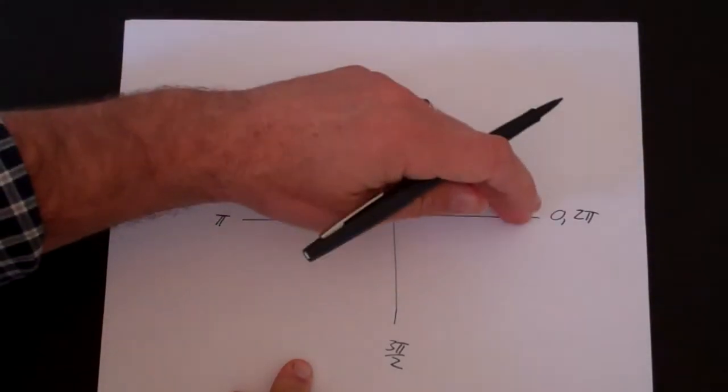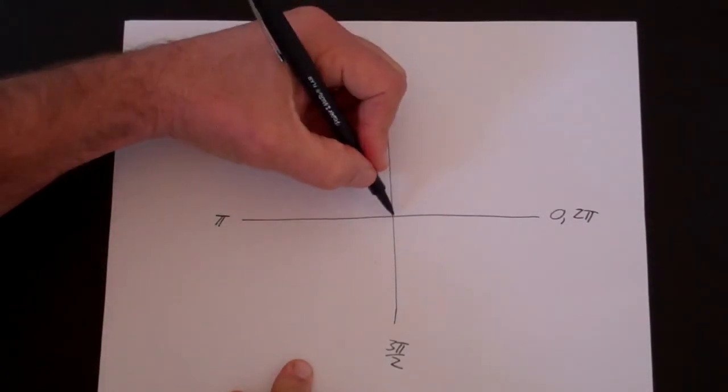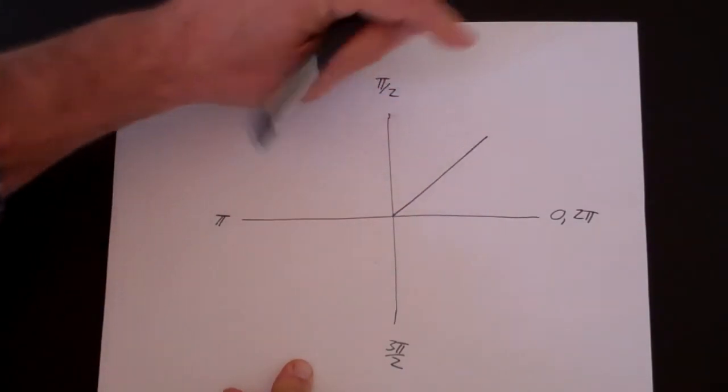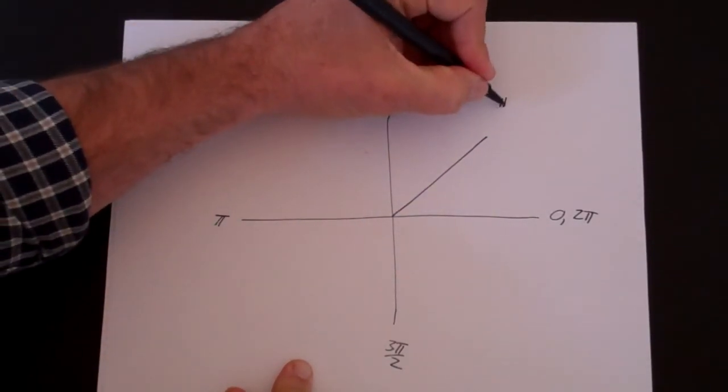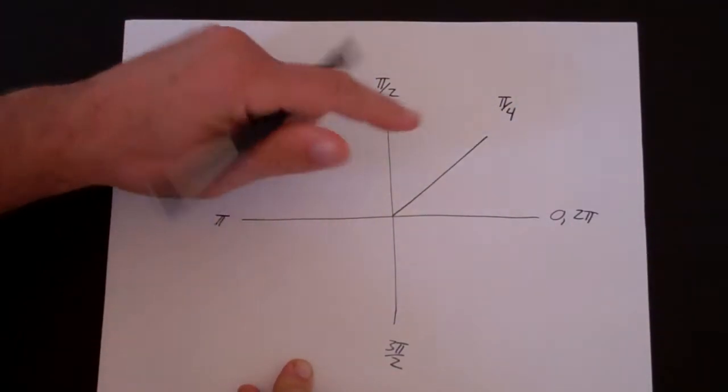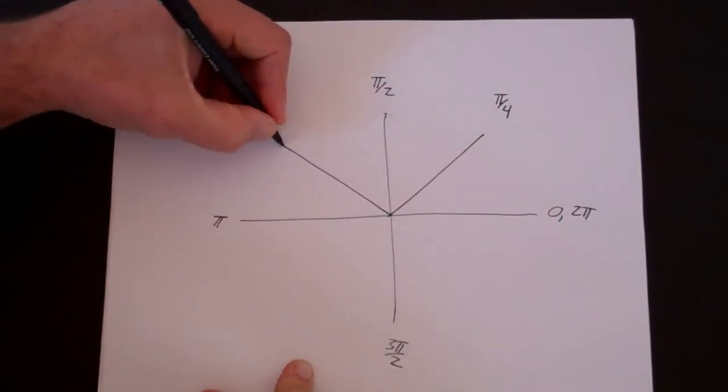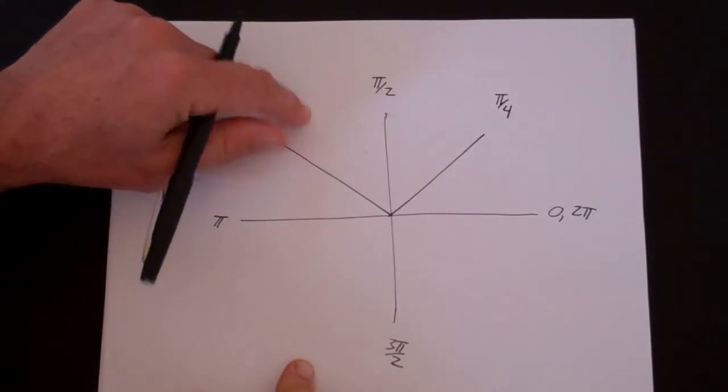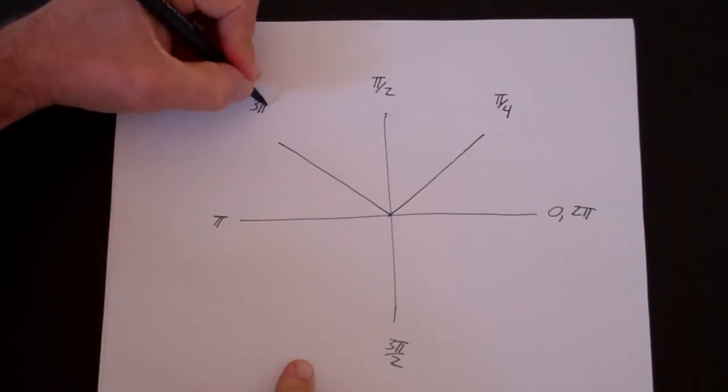Let's further subdivide it. If you subdivide 0 and π over 2, half of that gives you π over 4, because half of a half is a fourth, so that's π over 4. If we split this quadrant here, let's think what this angle here is going to be. That's 1, 2, 3, 3 parts, so it's 3π over 4.